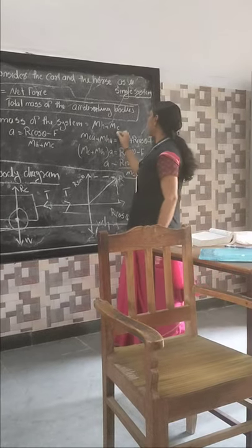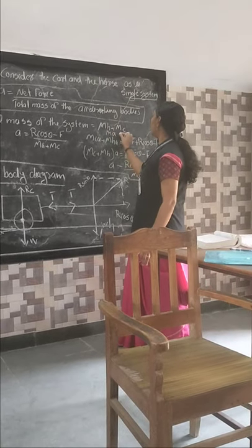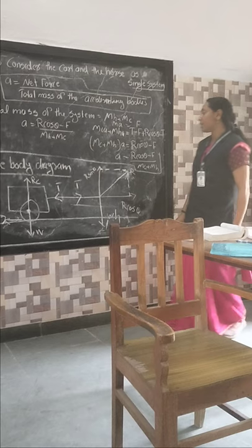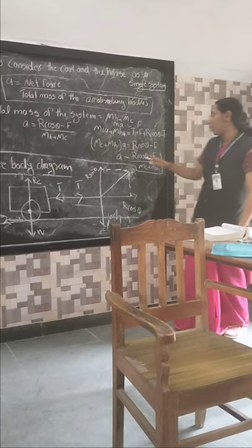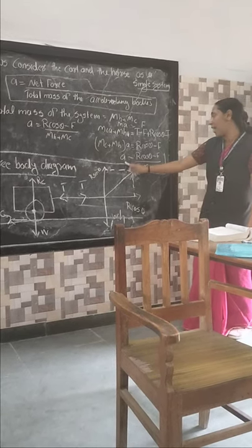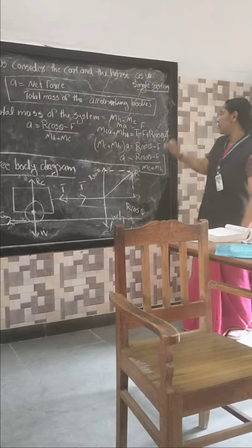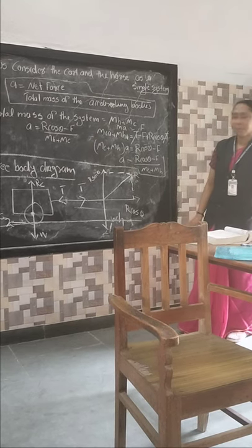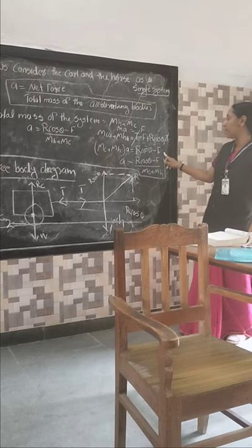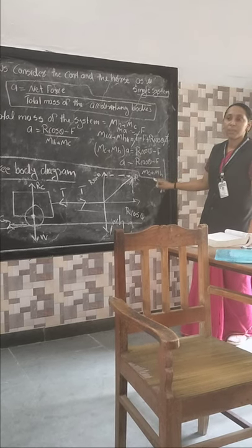Which expression is this? F equals ma. Then after that, when we solve for A, Mc plus Mh will be in the denominator. A equals - the T terms will cancel. Am I right? So R cos theta minus F divided by Mc plus Mh.